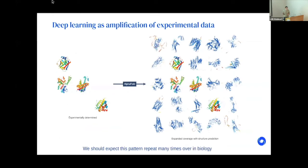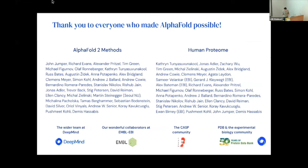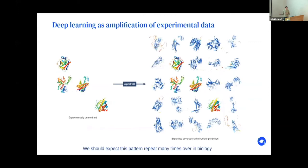That doesn't mean rare things will always be badly predicted — membrane proteins are somewhat rare in the PDB yet AlphaFold still predicts them well. But if we trained only on GPCR structures and had 100,000 GPCR structures, we'd probably be bad at kinases. We really have to think about what's the radius of data or classes of data on which we can collect. That'll be one of the really interesting challenges — to see how far we can push this.